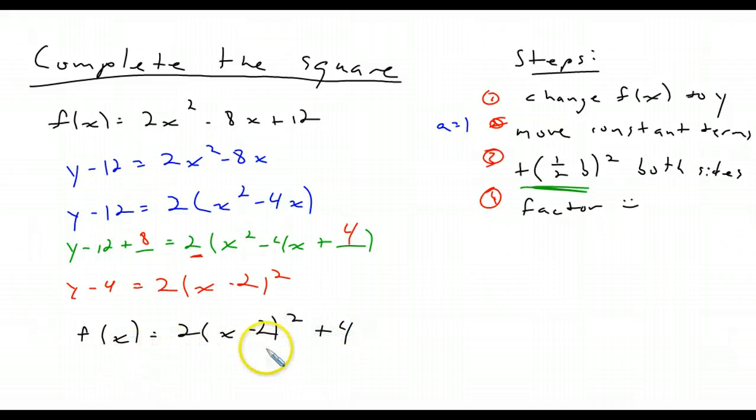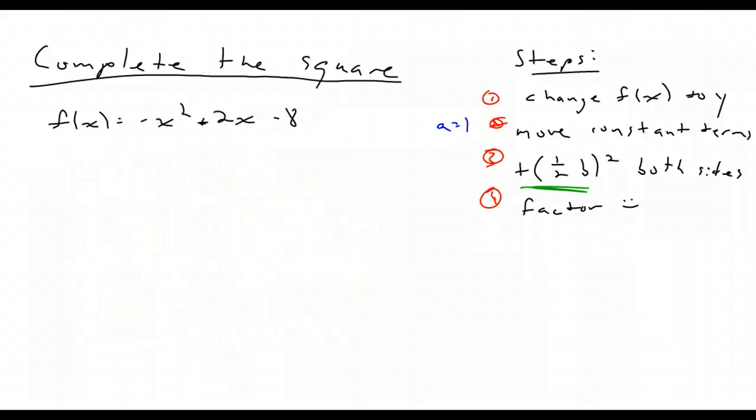That would be it. There's our square. There's our vertex 2, 4. We can graph it easy. It's just a wonderful thing. This is the last example I'm going to look at for completing the square. If you have questions, just ask me in class.